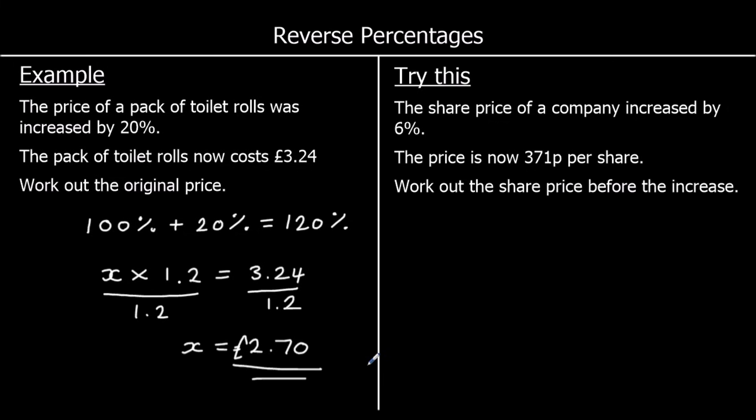Okay, here's a question for you to try. So pause the video, give it a go, and press play when you're ready to go through the answer. The share price of a company increased by 6%. So 100% plus 6% is 106%. The price is now £371 per share. Work out the share price before the increase.